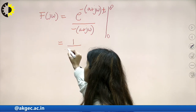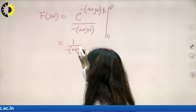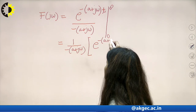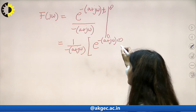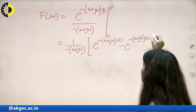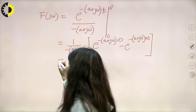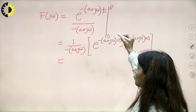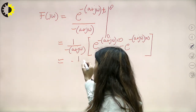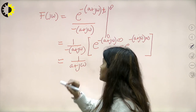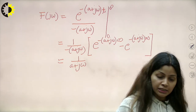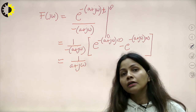Putting in the limits: the term at infinity goes to 0 (since a > 0), and the term at 0 gives −e^0 = −1 in the numerator over −(a+jω). Therefore F(jω) = 1 / (a + jω). I have calculated the Fourier transform of the given exponential function.